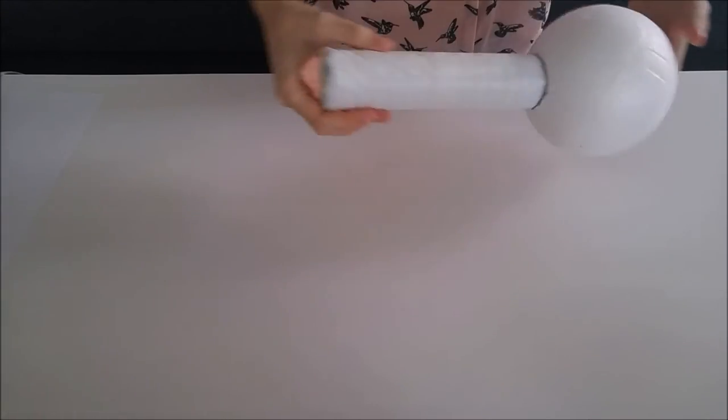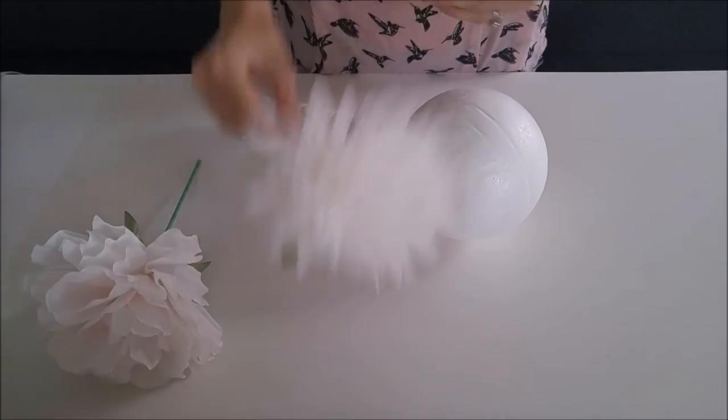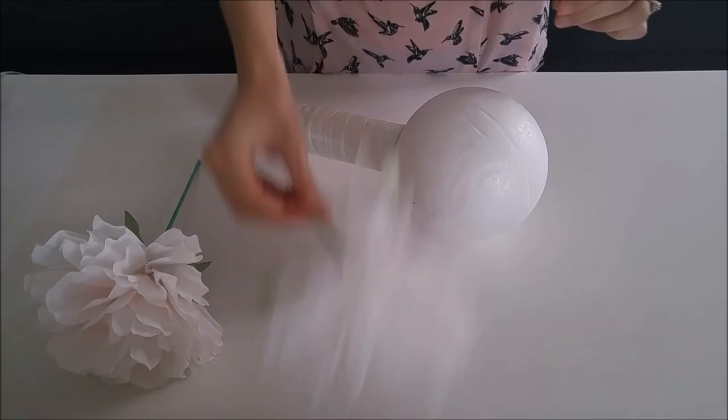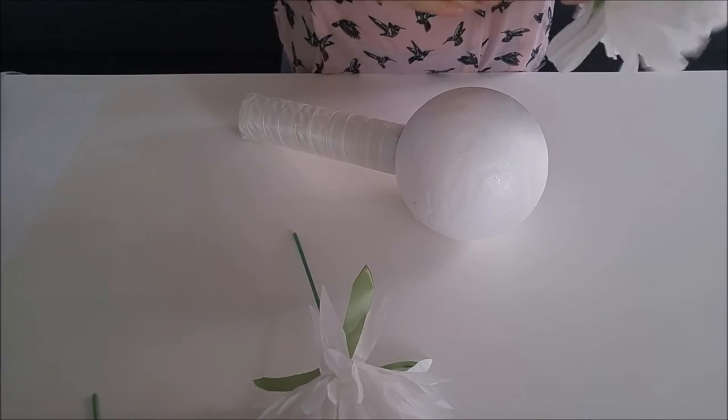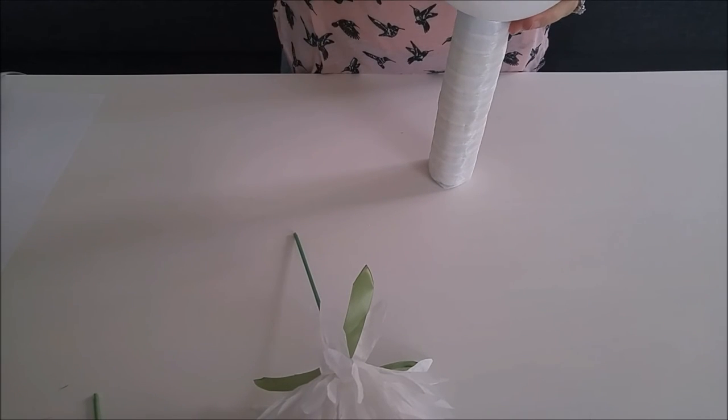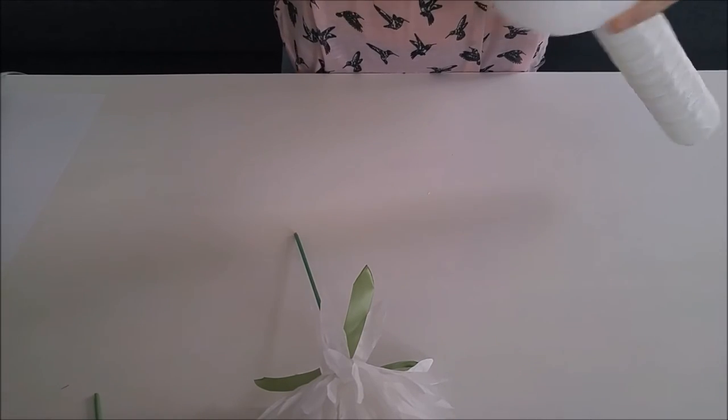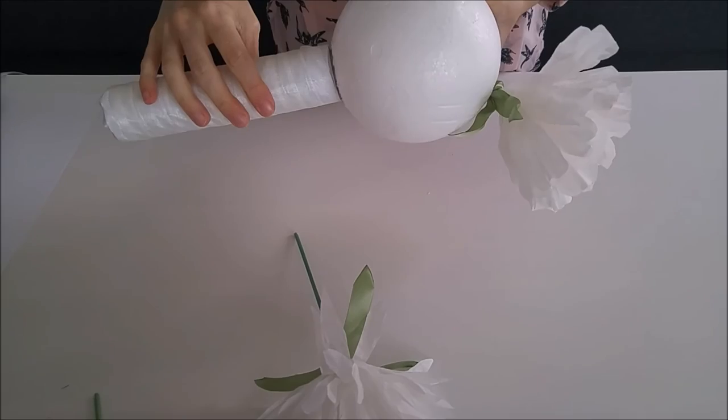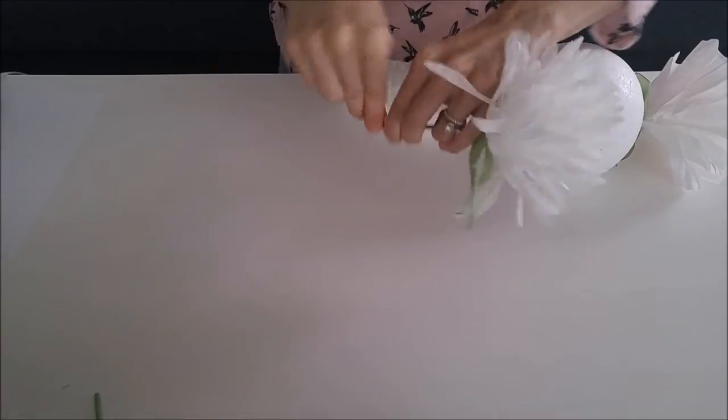Once you're happy with how your bouquet handle is looking wrapped in the ribbon of your choice, it's time to start adding our flowers to the head of the bouquet. And you can definitely use any kind of faux flowers or plastic or silk flowers. I'm using these paper flowers that I made—these are my coffee filter flowers. If you're interested in how to make those, I'll link the tutorial above. And I'm just trimming that stem and sticking it into the styrofoam ball.